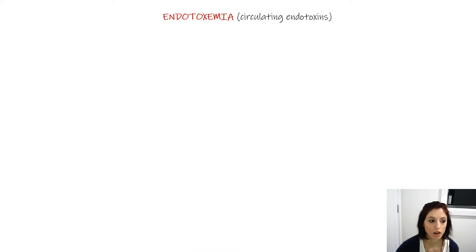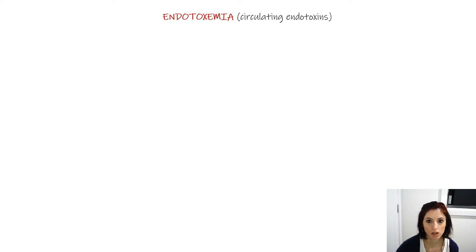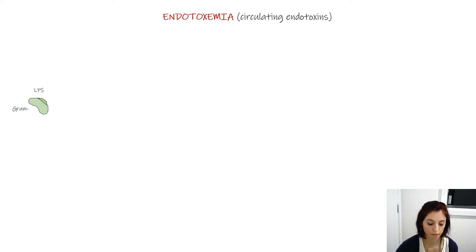First of all, endotoxemia means the circulation of endotoxins in the blood vessels. Endotoxins are part of the bacterial cell wall of gram-negatives and are called lipopolysaccharides.